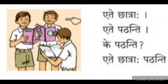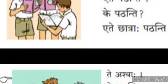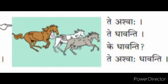One thing to remember: when they refer to etat, they will show a finger mark inside the box. And when they refer to te — the form of tat — the finger mark is outside the box. Te ashwaha — they are horses. Te dhavanti — they are running.